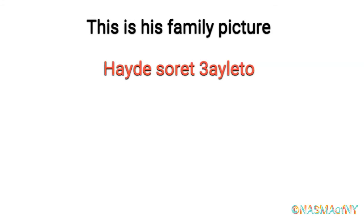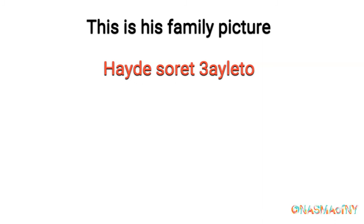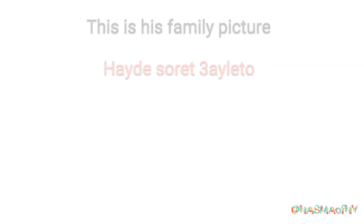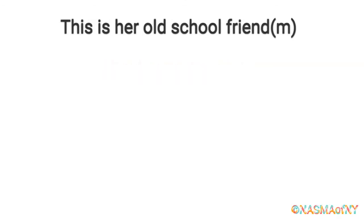Another example: this is his family picture — hayde surat aili-tu. My first noun is feminine: surah. That's why I said hayde, because my first noun is feminine, my demonstrative is going to be feminine. Where did 'his' go? On the second noun — and that's why it's aili-tu.